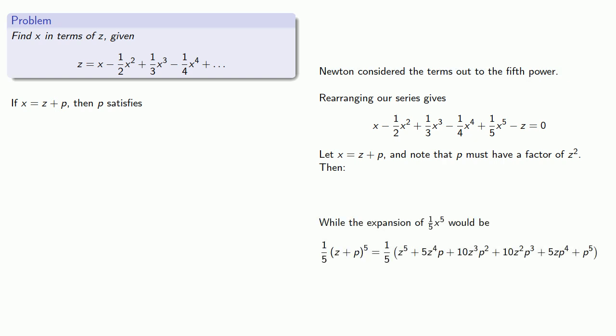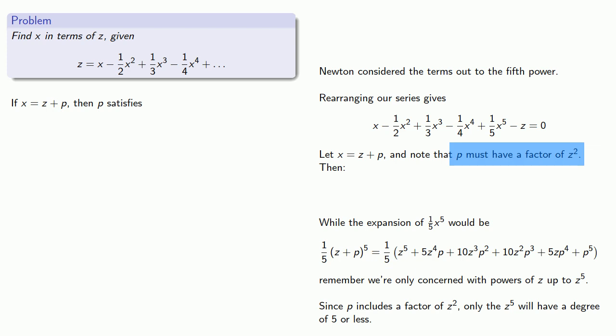Well, the expansion of one-fifth X to the fifth would look like this. Remember, we're only concerned with powers of Z up to Z to the fifth. And since P includes a factor of Z squared, then only the Z to the fifth term will have a degree of five or less. For example, this term, that's Z to the fourth times P, which is at least a Z squared. That's a six-degree term. And so, we only need to include the first term in our expansion.